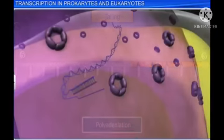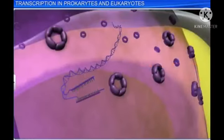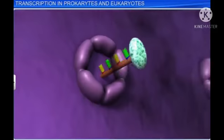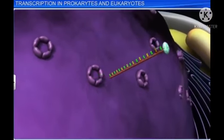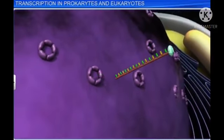After these processes, the HnRNA becomes mRNA and the transcription process ends. The mRNA can now be transported out of the nucleus and further used for the process of protein synthesis during translation.